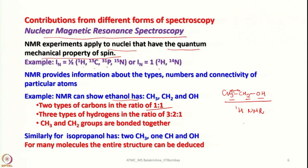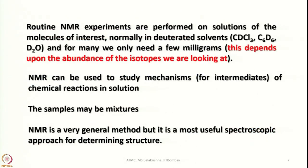Similarly, for isopropanol, from ¹H NMR you can see it has two methyl groups, one CH group, and one OH group. For many molecules the entire structure can be deduced. Routine NMR experiments are performed on solutions of the molecules of interest, normally in deuterated solvents such as CDCl₃, C₆D₆, D₂O, or even acetonitrile (CD₃CN). For many we only need a few milligrams, and about 10% NMR-active nuclei should be present.